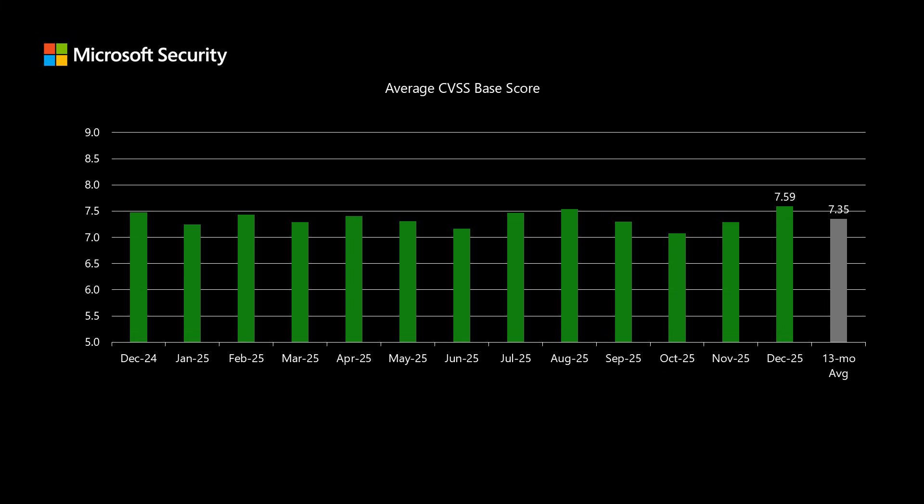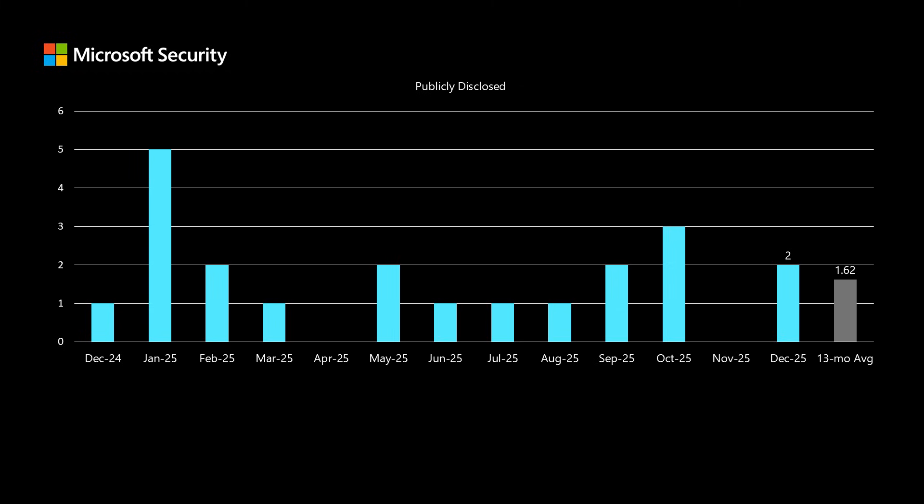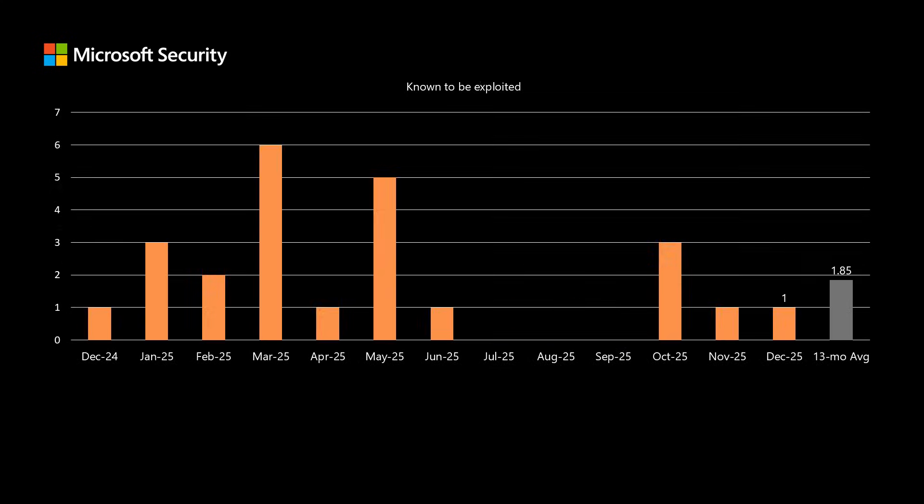The CVSS score also does not take into account whether or not a vulnerability is publicly disclosed. This month, we have two of these; we've been averaging just over one and a half. These are vulnerabilities where the existence of a vulnerability was made public prior to release — it could be a threat actor releasing proof-of-concept code, or simply a security researcher posting that they found a new issue without all the details needed to develop exploit code. Another category is whether a vulnerability is known to be exploited in the wild at the time of release. This month, we do have one vulnerability that hits that mark. We've been averaging just under two for the past 13 months.